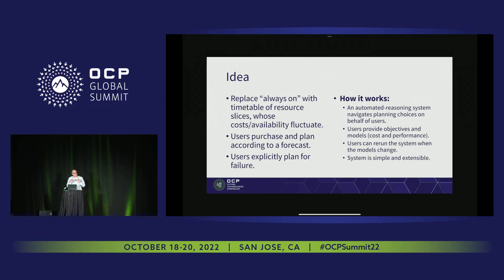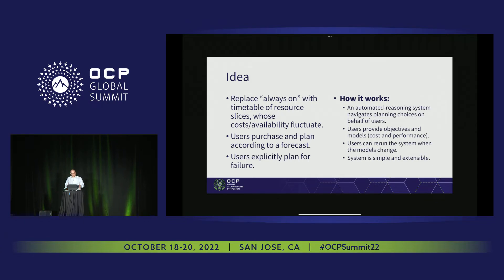I'm not going to unpack all the details during this talk, but basically at the core of this it involves modeling. It connects, for example, to the earlier talk by Sami about telemetry and building models that can be used predictively, and using those models within an automated reasoning framework. This is at its heart symbolic AI, where you formalize a type of reasoning that goes into making decisions under uncertainty. Users or their agents would then provide preferences and objectives, make use of models, and this can be rerun to re-establish their choices.